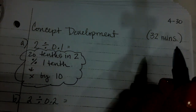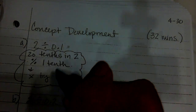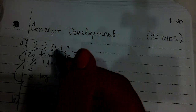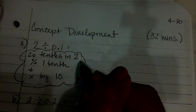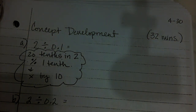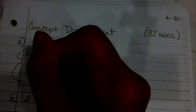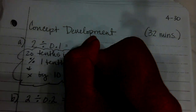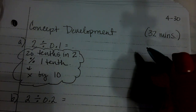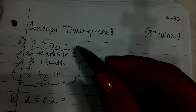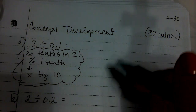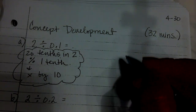So, 2 times 10 is 20, meaning there are 20 tenths in two. We also know that any division expression can be written as a fraction. So, for this lesson, we're going to rewrite division expressions as fractions and relate division and decimals together.